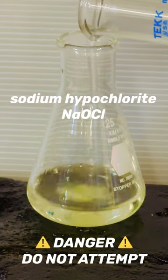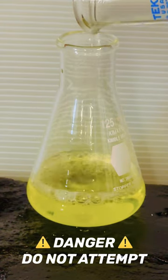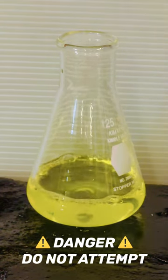This flask contains a solution of sodium hypochlorite, which is found in bleach. When acid is added to this solution, a yellow vapor is formed.